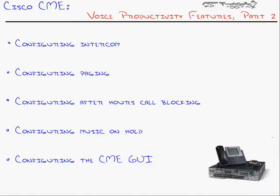This nugget picks up right after voice productivity features part one, adding more features to our CME abilities. We'll look at intercom paging, after-hours call blocking, setting up music on hold, and last but not least turning on the CME graphic interface or web-based GUI. Some of these features are simple and I'll configure them right here; others need a little digression before we can set them up.